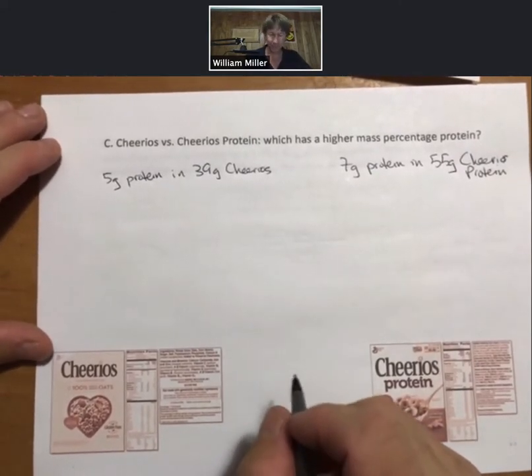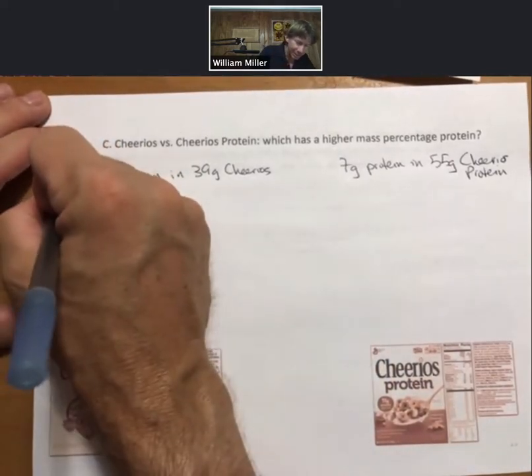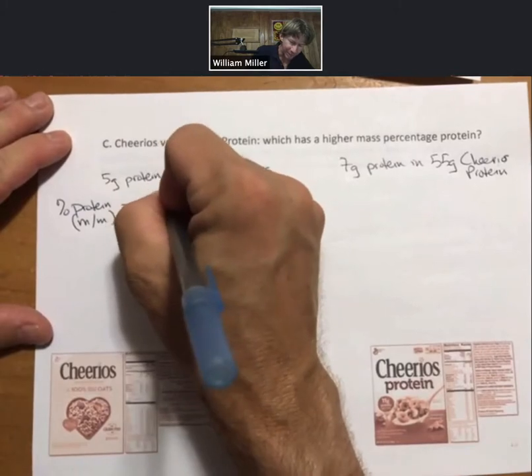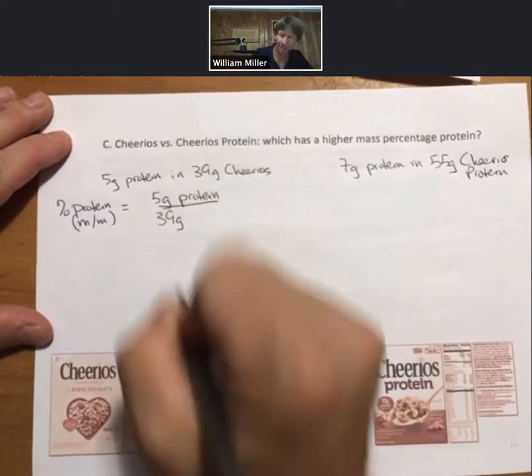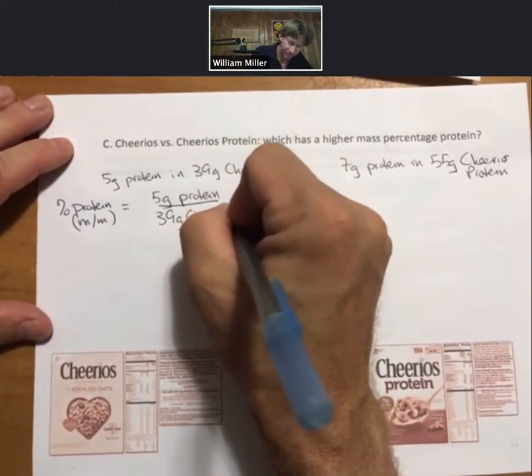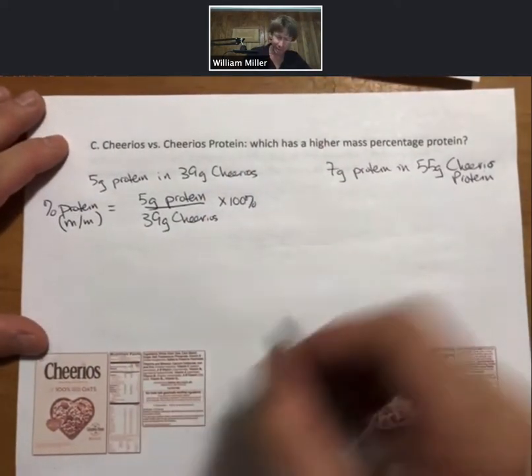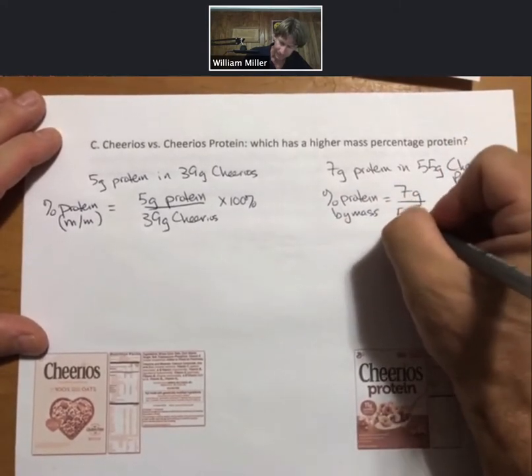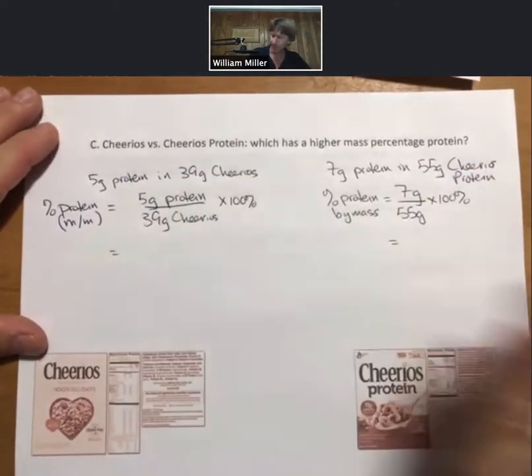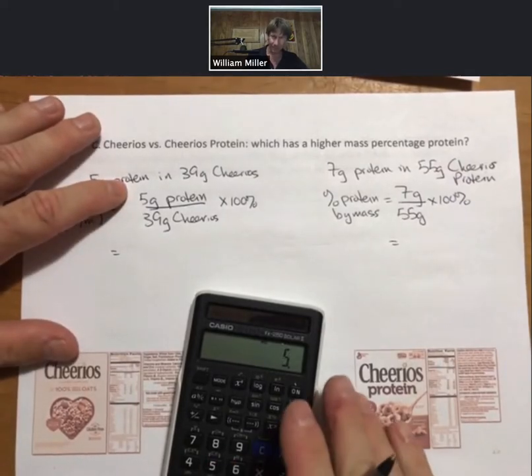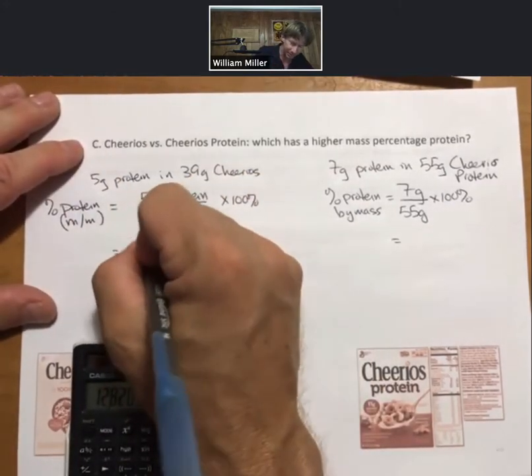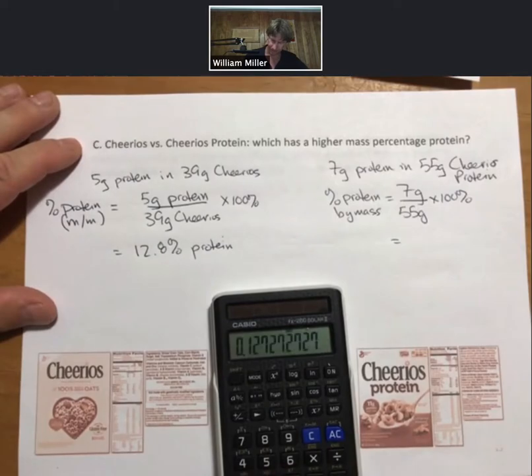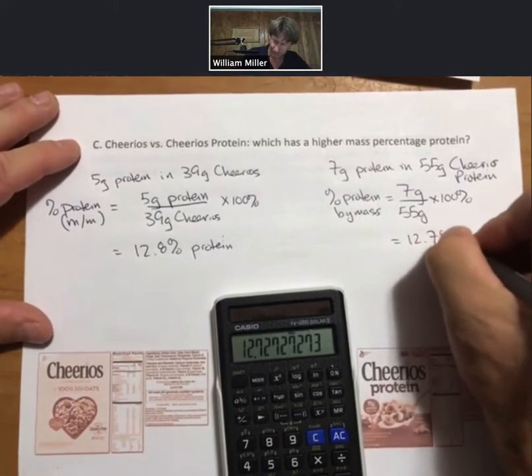Here's Cheerios: Cheerios has five grams of protein in 39 grams of Cheerios. Cheerios Protein has seven grams of protein in 55 grams of Cheerios Protein. We can figure out the percent by mass. Percent protein is going to equal five grams of protein divided by 39 grams of sample, in this case Cheerios, times 100 percent. Do the same thing over here. When we run the numbers, five grams divided by 39 times 100, I get 12.8 percent. Seven divided by 55 times 100, I get 12.7 percent protein mass by mass.